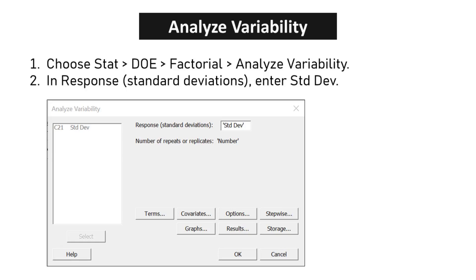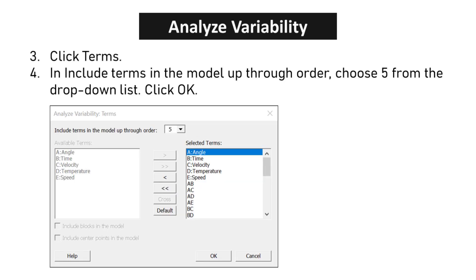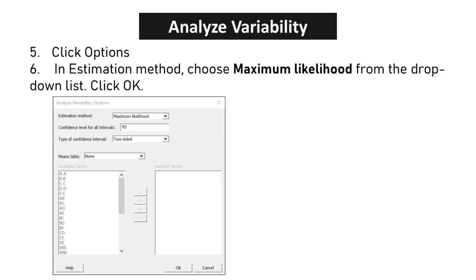Choose STAT, DOE, factorial, analyze variability. In response, standard deviations, enter STD DEV. Click TERMS. In include terms in the model up through order, choose 5 from the drop-down list. Click OK. Click OPTIONS. In estimation method, choose maximum likelihood from the drop-down list. Click OK.